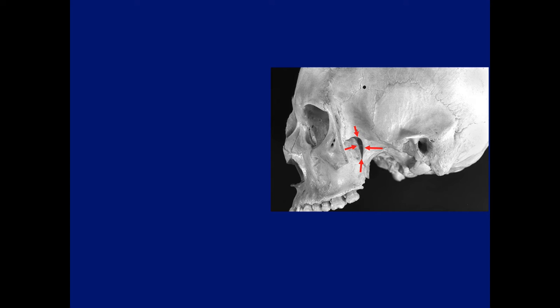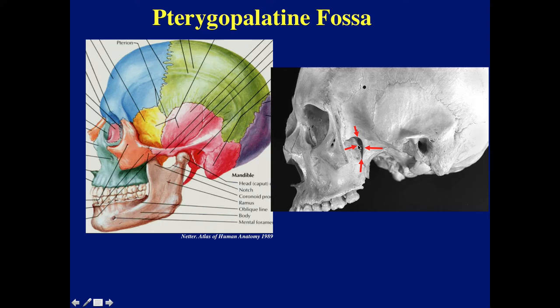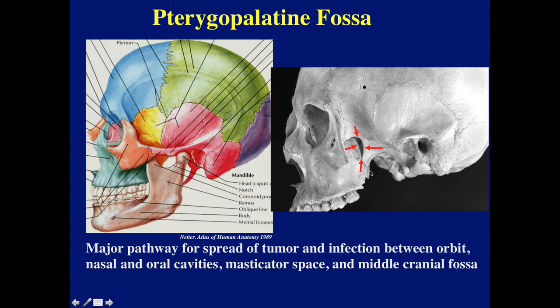The structure I was outlining is the pterygomaxillary fissure of the pterygopalatine fossa — a very tiny structure, however incredibly important in perineural spread of tumors, as you'll see later. One problem is that in most images of the skull the mandible hides the pterygopalatine fossa, but when you remove the mandible it's more obvious. The pterygopalatine fossa is a major pathway for spread of tumor and infection between the orbit, the nasal and oral cavity, the masticator space, and the middle cranial fossa.